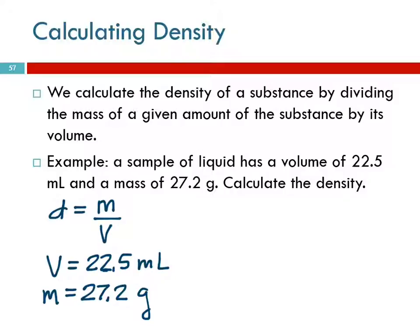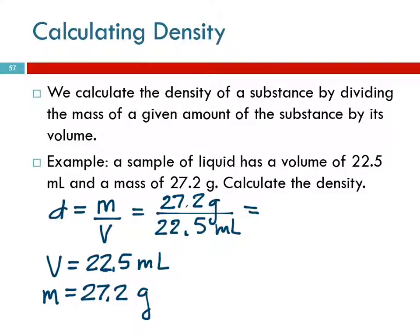Calculating the density, we use the density equation. We identified our variables and plug them in: where it says M, put in the mass, 27.2 grams; where V is, plug in the volume, 22.5 milliliters. 27.2 divided by 22.5 gives 1.208 repeating. The units don't cancel — just copy them down: grams over milliliters, which is a unit of density, grams per milliliter.